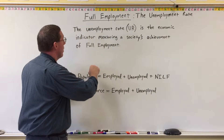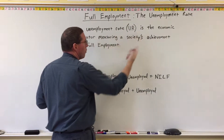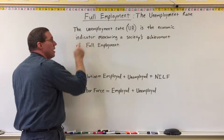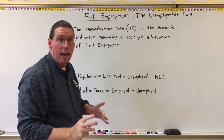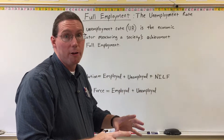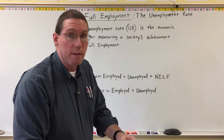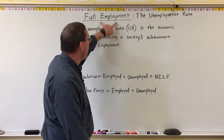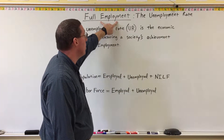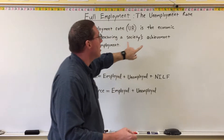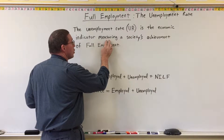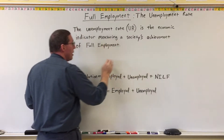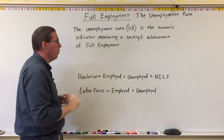What is the unemployment rate? The unemployment rate, which we'll refer to as UR, is the economic indicator — remember, an economic indicator is a concrete calculation that reflects an abstract concept. So the abstract concept is full employment, and the concrete indicator is the unemployment rate. It measures a society's achievement of full employment — the degree to which society is achieving full employment.